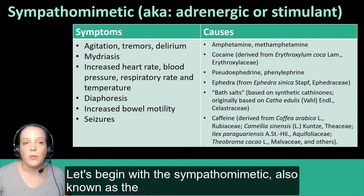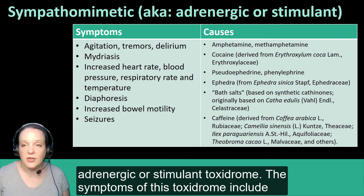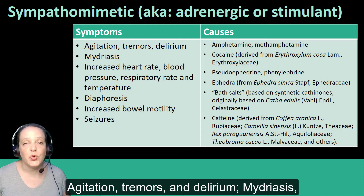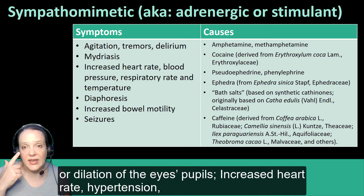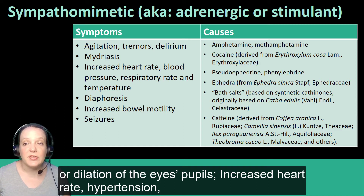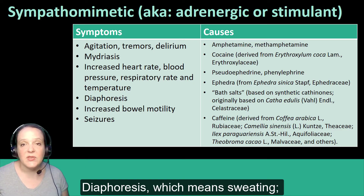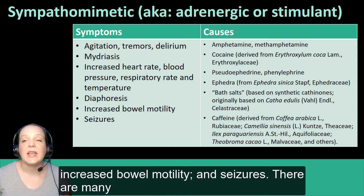Let's begin with the sympathomimetic, also known as the adrenergic or stimulant toxidrome. The symptoms of this toxidrome include agitation, tremors, and delirium; mydriasis, or dilation of the eye's pupils; increased heart rate; hypertension or high blood pressure; high respiratory rate; and fever; diaphoresis, which means sweating; and increased bowel motility and seizures.